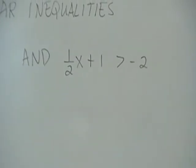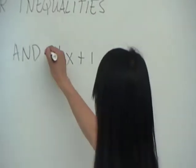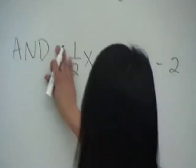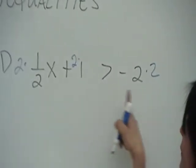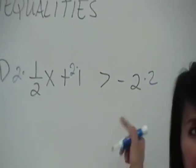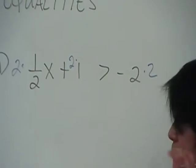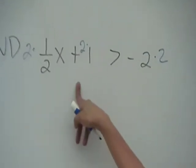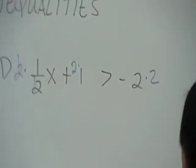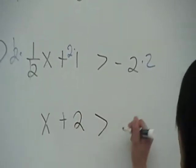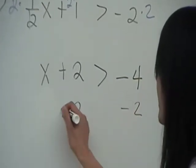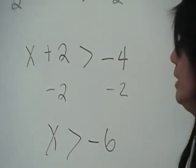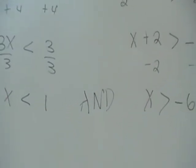Multiply both sides by 2. We don't need to worry about switching the inequality symbol because 2 is positive. Distribute the 2 on the left to get x plus 2 greater than negative 4. Then subtract 2 from both sides, giving x greater than negative 6. So the compound answer is: x less than 1 and x greater than negative 6.